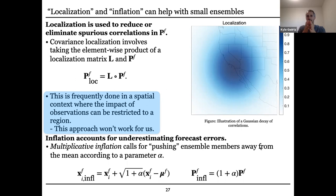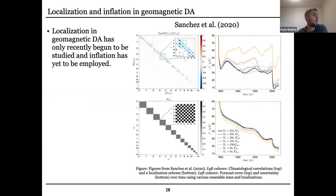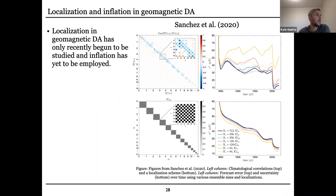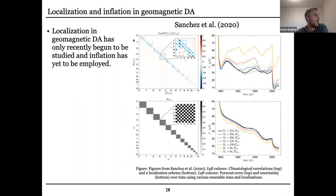How to do something like localization is a big unknown, and only recently have some people started to really think about these things. In particular, the Sabrina Sanchez group has started doing something like this. They made a really long run of their dynamo model and looked at the long-term correlations in that run. On the axes are coefficients for the poloidal magnetic field at the core-mantle boundary versus coefficients describing the poloidal velocity field. These are the climatological correlations in the system.